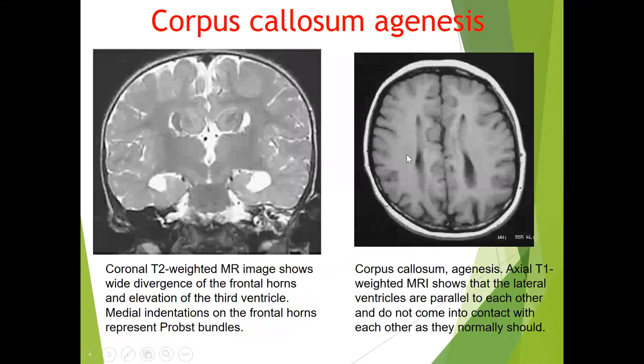On T2-weighted coronal images, there is wide divergence of the frontal horns and elevation of the third ventricle with medial indentation on the frontal horn representing Probst bundles. On axial T1-weighted images, the lateral ventricles are parallel to each other and do not come in contact with each other as they normally should.